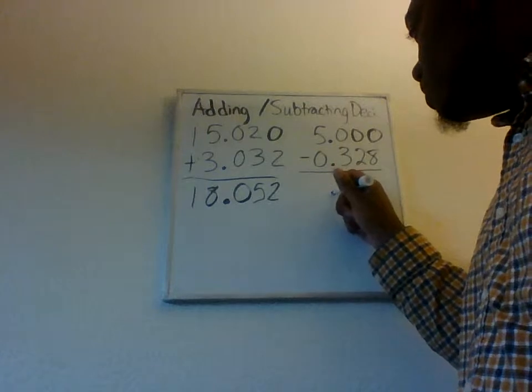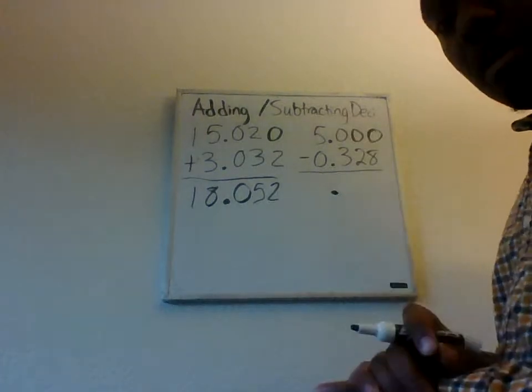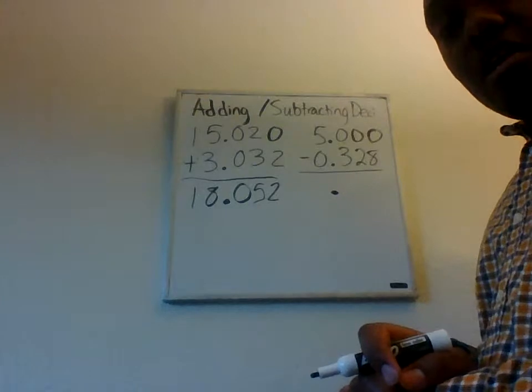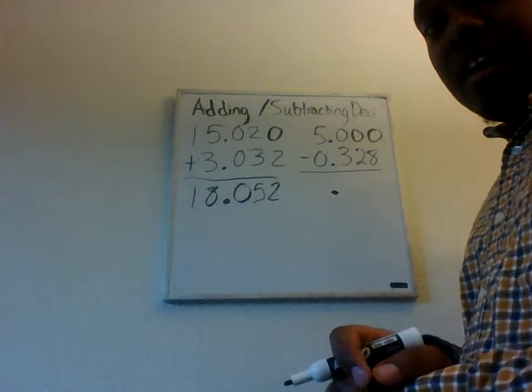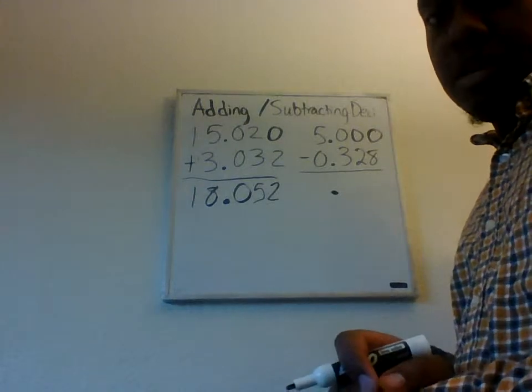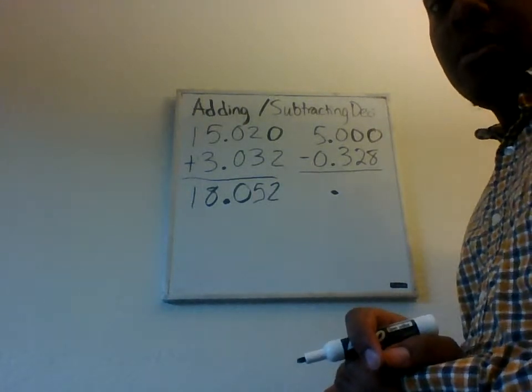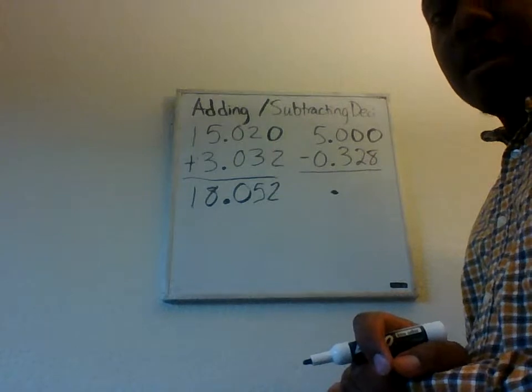Okay? Our answer, we know that the decimal will go in the same spot as the others, because it's all lined up exactly how it should be. And so, all we have to do now is subtract, as we normally did. You can look at this as 5,000 minus 328 if you wanted to. Just remember where the decimal goes. That will also be another way to make this easier for a lot of people.